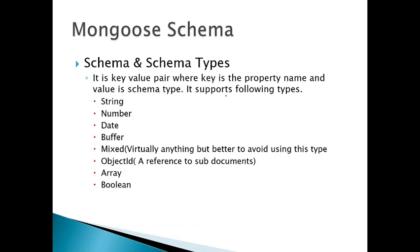In a schema, everything is a key-value pair, similar to a JSON object. The schema types supported by Mongoose are: String, Number, Date, Buffer, Mixed (which can store anything — numbers, strings, dates, etc.), ObjectId (a hashed reference representing the document's _id field as assigned by MongoDB), Array, and Boolean. These are all the available types.